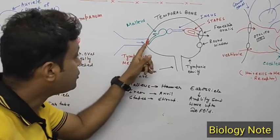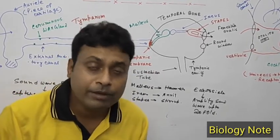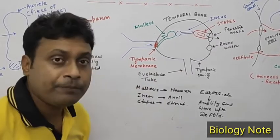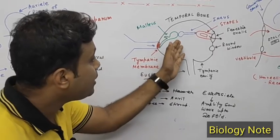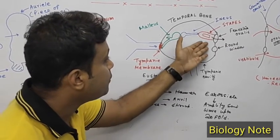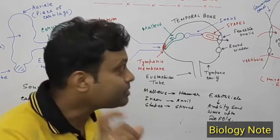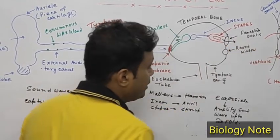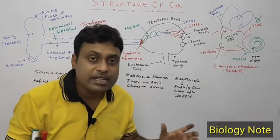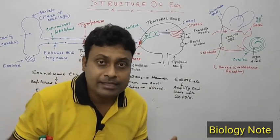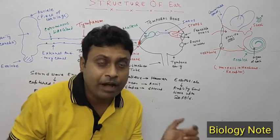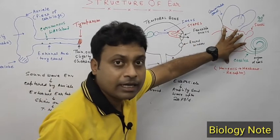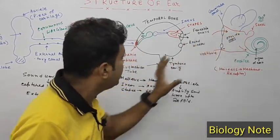When sound waves strike the tympanic membrane, it vibrates and this vibration is transferred to the ear ossicles. The ossicles cause vibration of the stapes, whose footplate is present in the fenestra ovalis. The stapes moves and this vibration is transmitted through the fenestra ovalis into the internal ear.